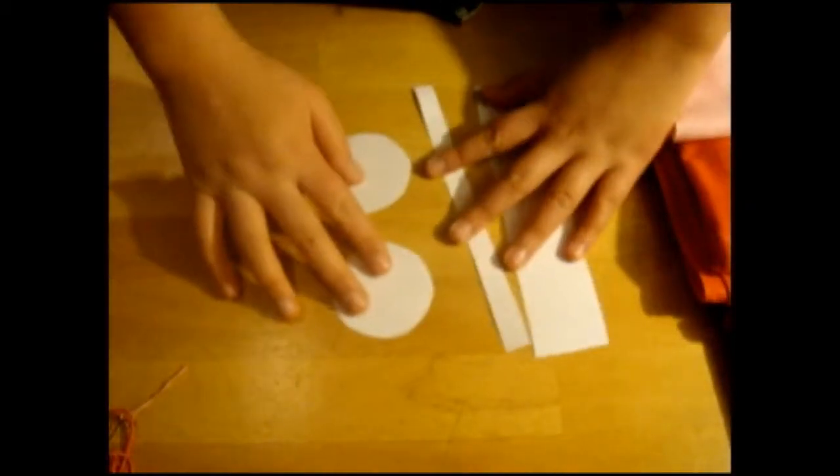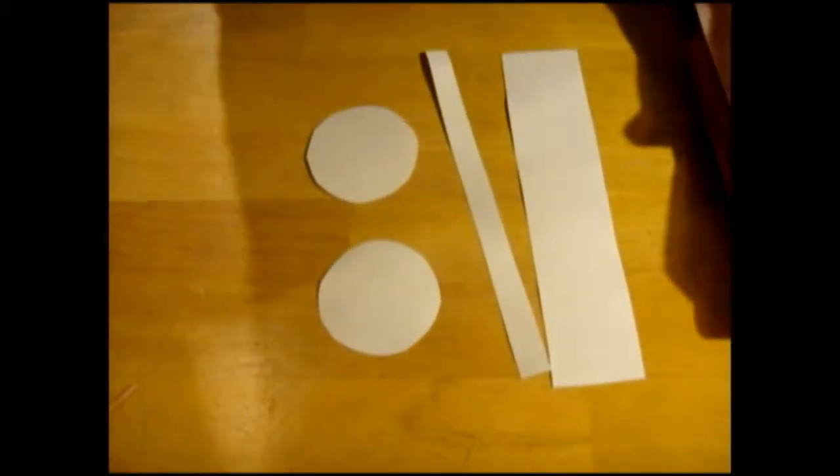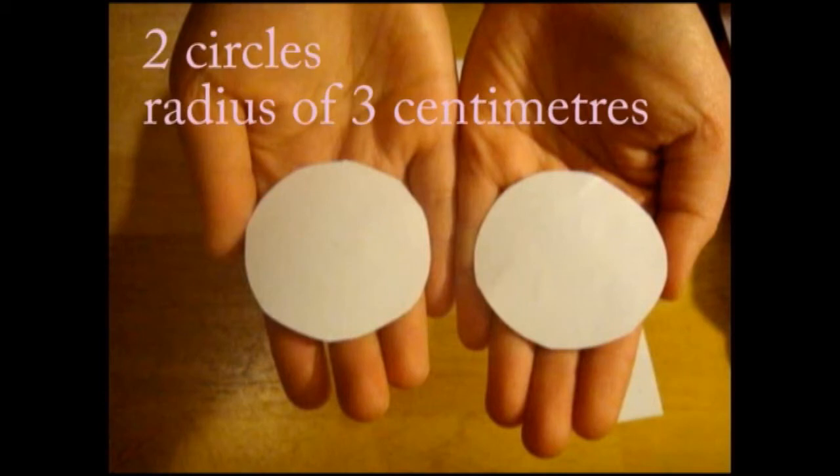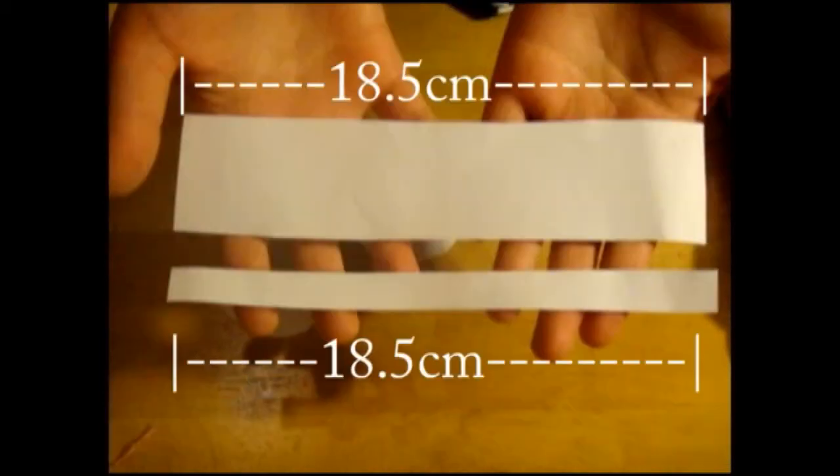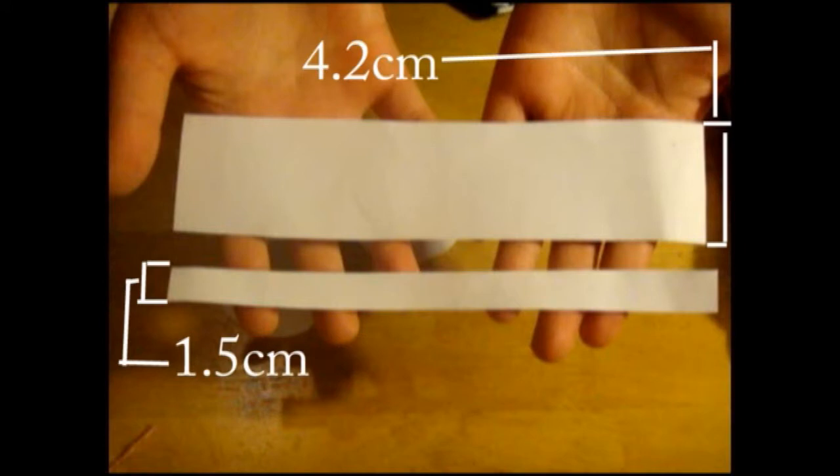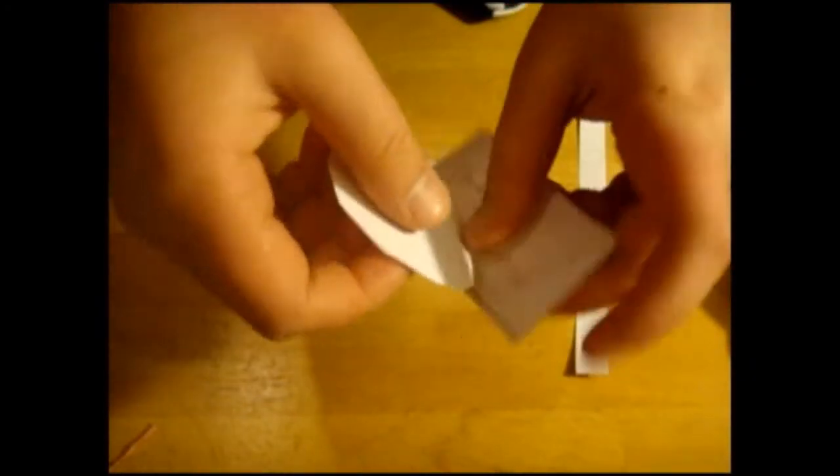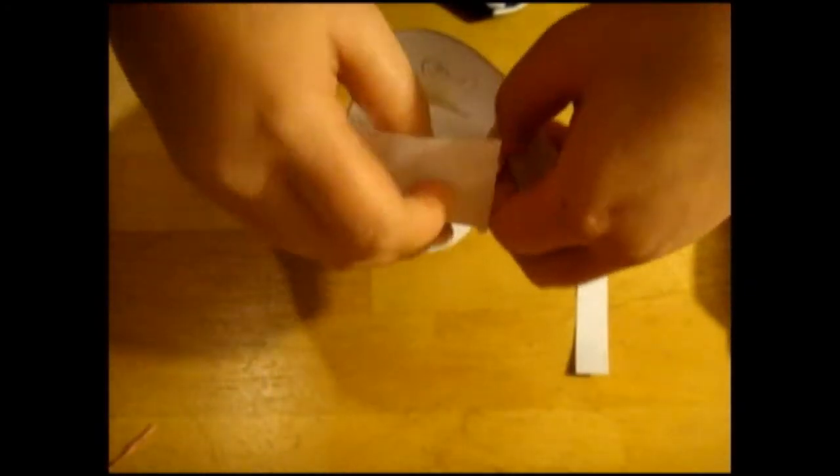You'll need to cut out some templates, so you'll need two circles of the same size. These have radius of three centimeters. With the rectangular pieces, they have a length of 18.5 centimeters. The smaller one has a width of 1.5 centimeters, and the larger one 4.2 centimeters. You should be able to wrap the rectangle around the circle perfectly.